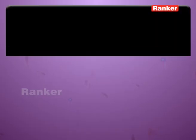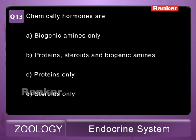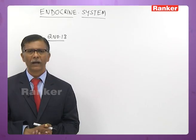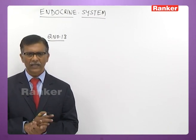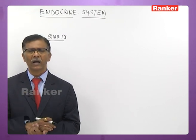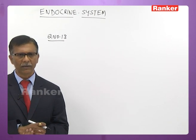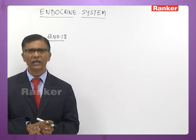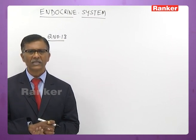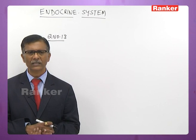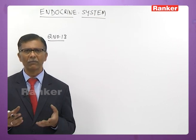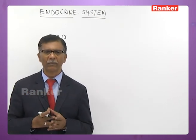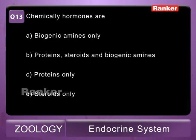Thirteenth question: chemically, hormones are A - biological amines only, B - proteins, steroids, and biological amines, C - proteins only, D - steroids. Hormones are made up of various chemicals — proteins, steroids, and biological amines. Biological amines include adrenaline and norepinephrine. Hormones of anterior pituitary, posterior pituitary, and pancreas are proteins. Hormones of adrenal cortex are steroids. The correct answer is B — proteins, steroids, and biological amines.